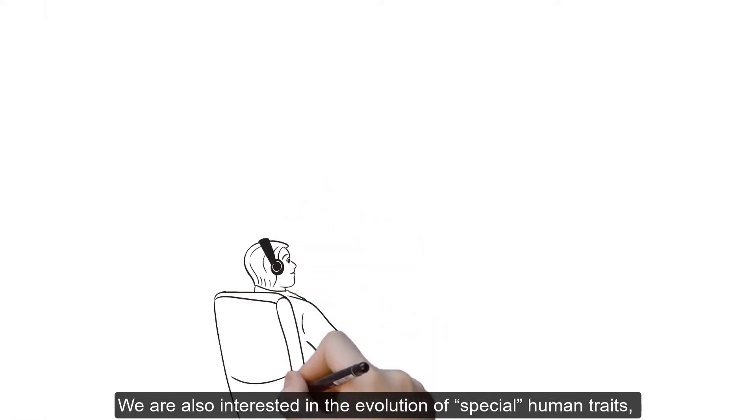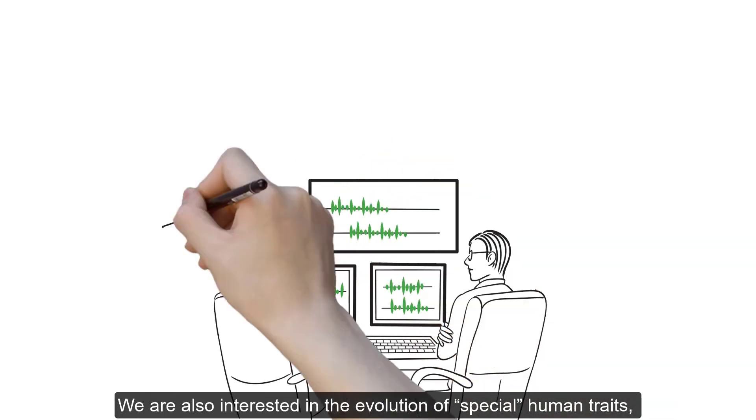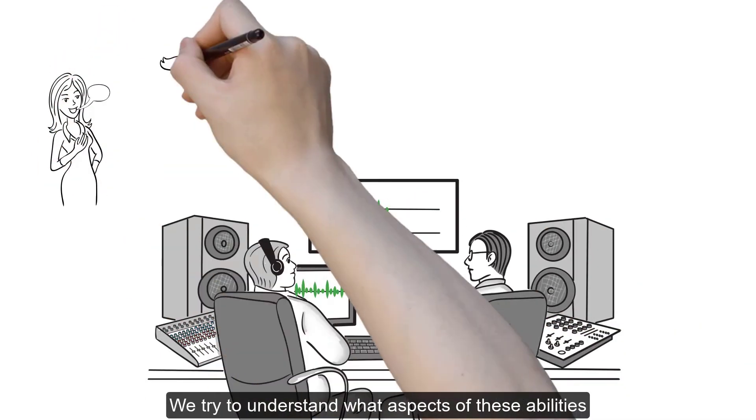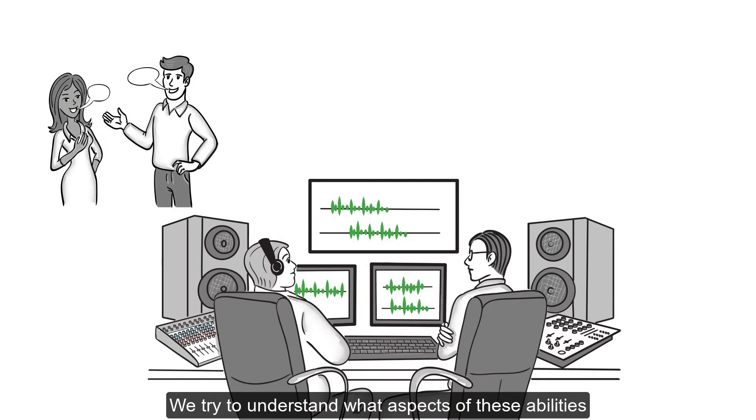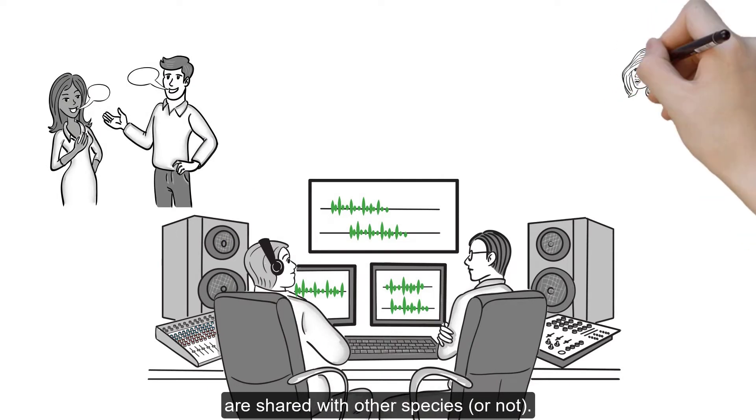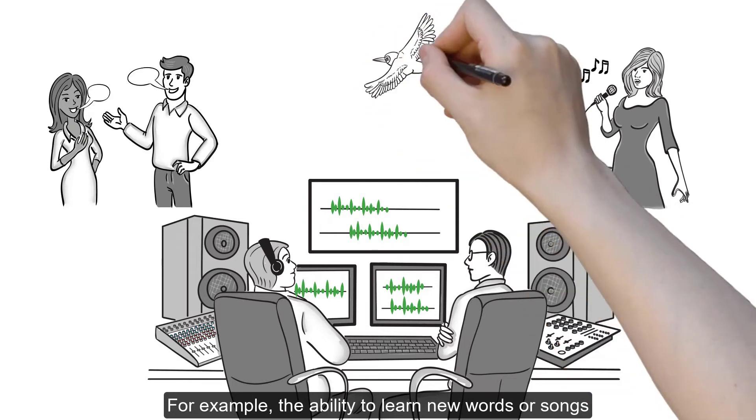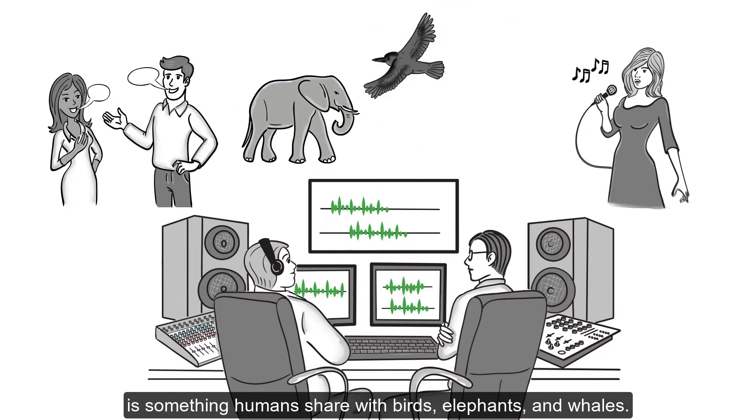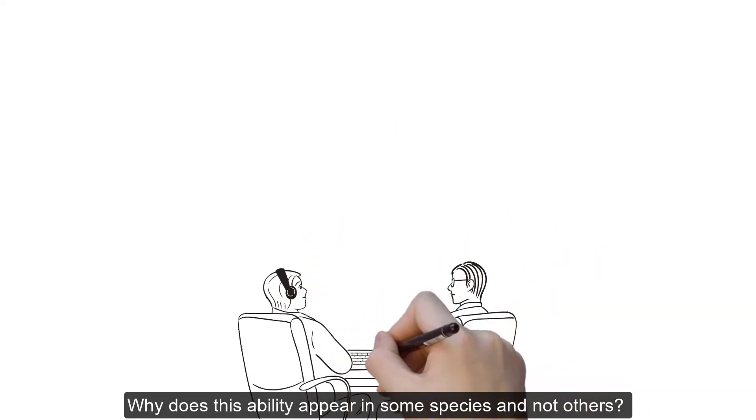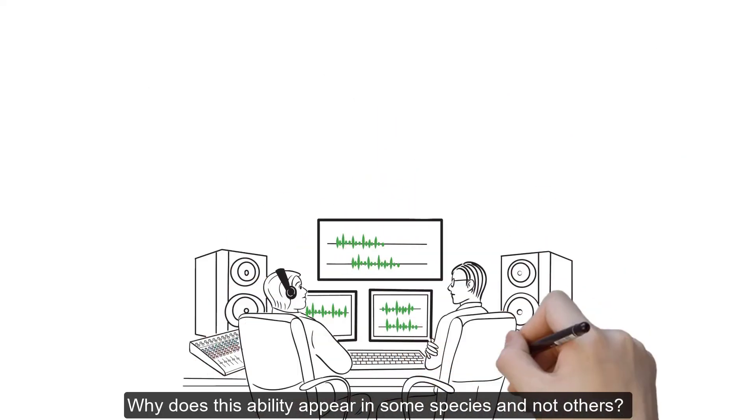We are also interested in the evolution of special human traits, like language and music. We try to understand what aspects of these abilities are shared with other species, or not. For example, the ability to learn new words or songs is something humans share with birds, elephants, and whales.